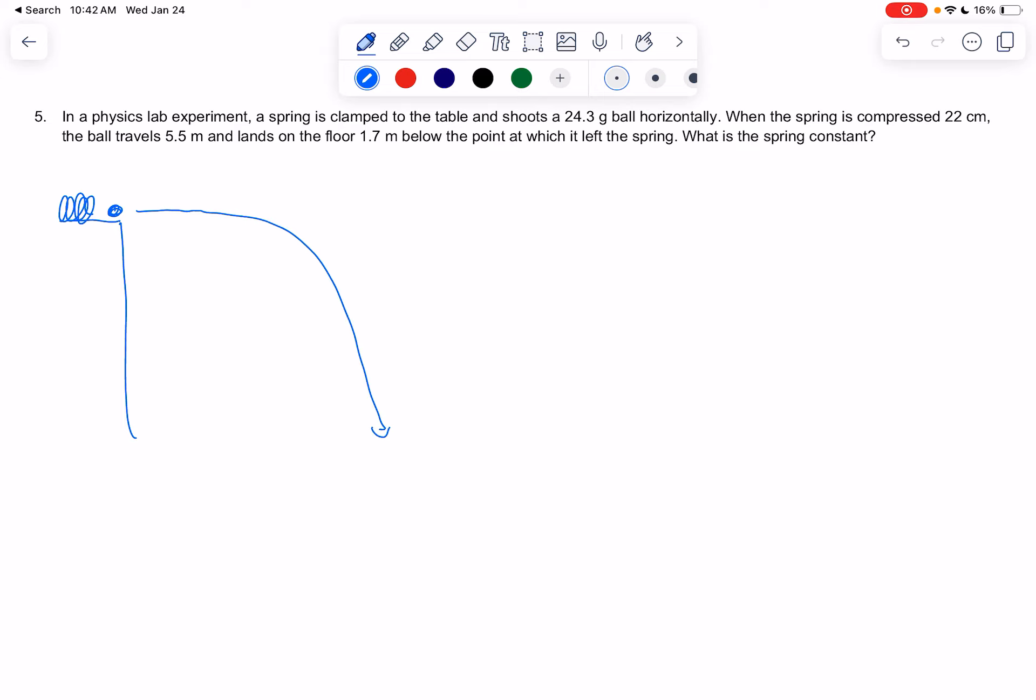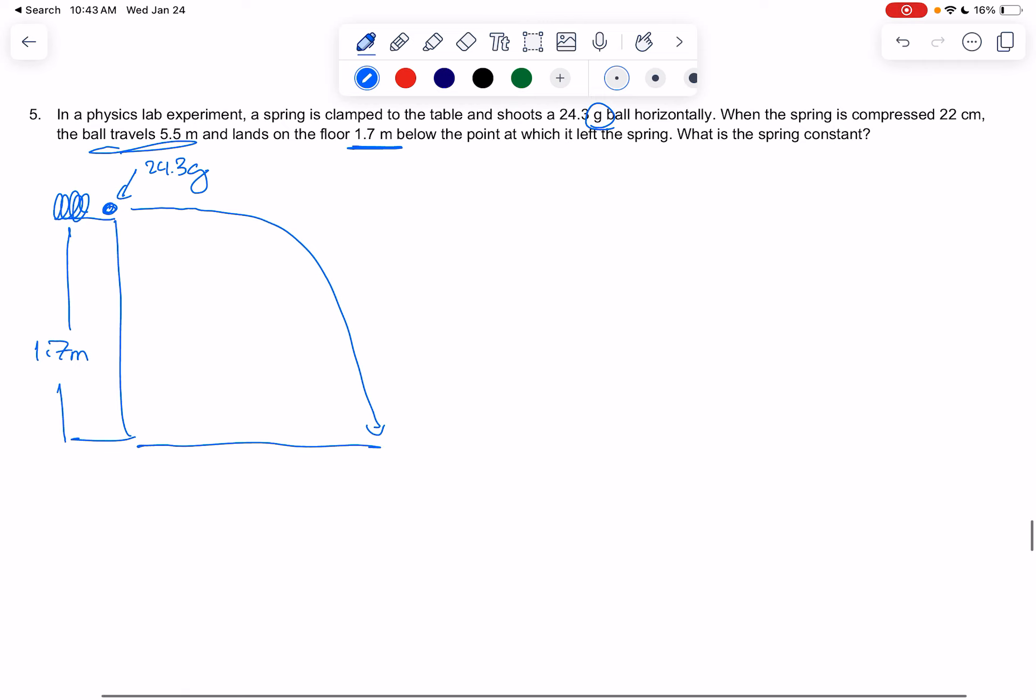And what do we know? Let's diagram it. Of course, we have 1.7 meters. That's the height of the table. We know the mass of the ball is 24.3. Now watch that. That's in grams. So you're going to need to convert to kilograms at some point. And the ball travels 5.5 meters in the air. That's 5.5 meters.